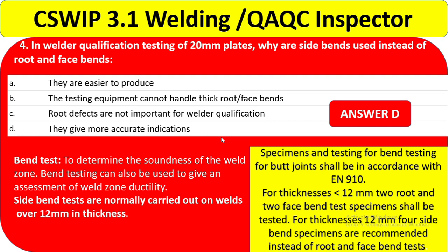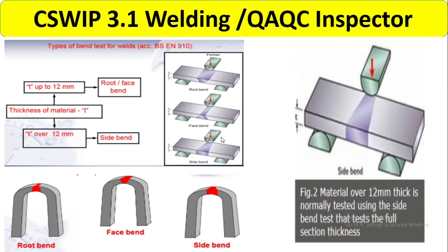To clarify: for thickness less than 12 mm, 2 root bends and 2 face bends are compulsory. For thickness 12 mm and above, side bends are used instead of root and face bends. In a root bend test you apply pressure on the face; in a face bend test you press on the root; in a side bend you press on one side of the plate. The answer is D.